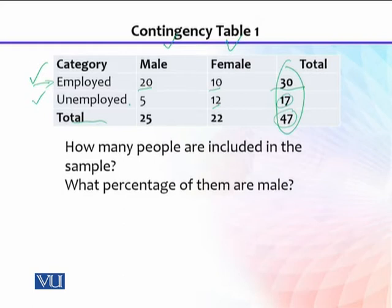We can also read the table column-wise. Looking at the first column — males — the total number of males is 25: 20 out of them are employed and 5 are unemployed. Similarly, the total number of females is 22: 10 of them are employed and 12 are unemployed.